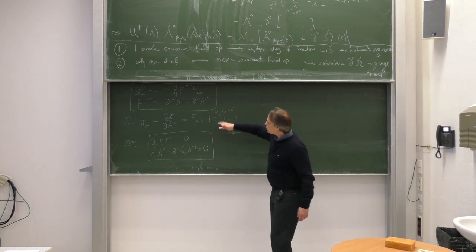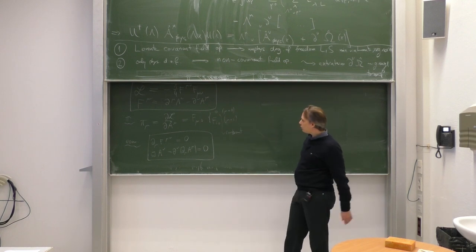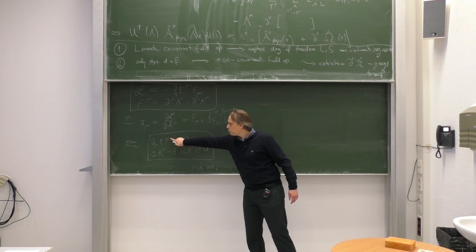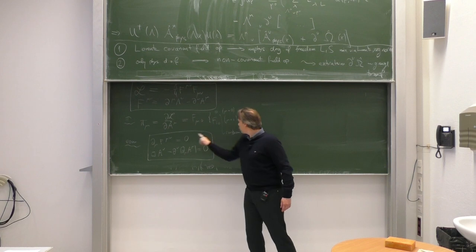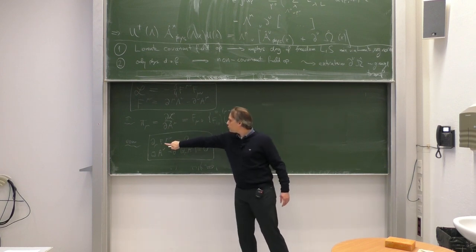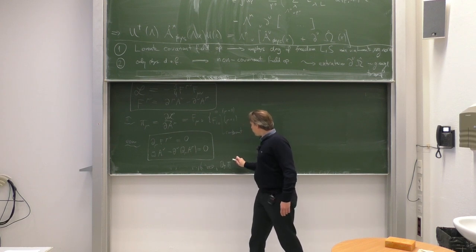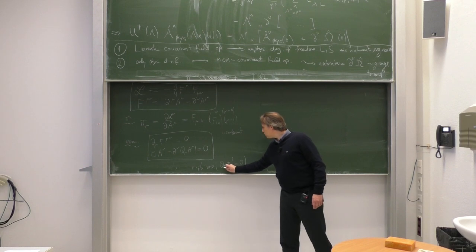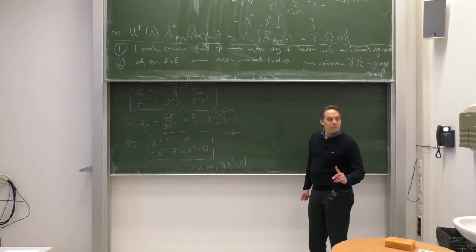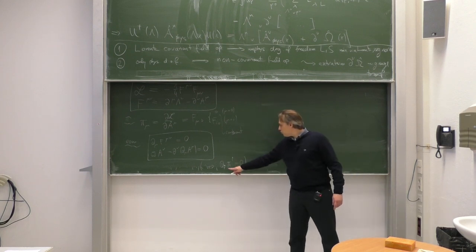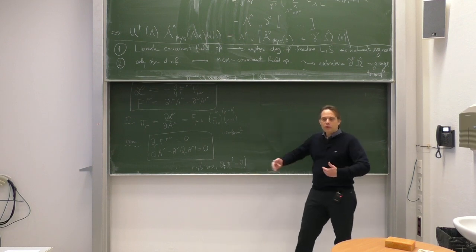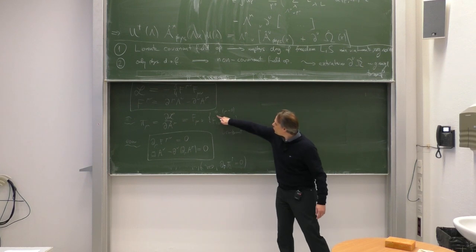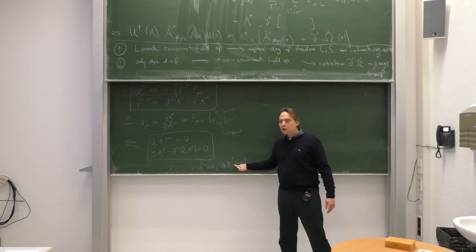It is always good to look at what happens to the constraints in the context of the equations of motion. For mu equals 0, we simply have d i pi i equals 0. That is also a constraint, because it's an equation of motion which does not contain the time derivative. Anything where you get a relationship between canonical variables without time derivative is a constraint. So we have actually two constraints: pi 0 has to vanish, and d i pi i also has to vanish.